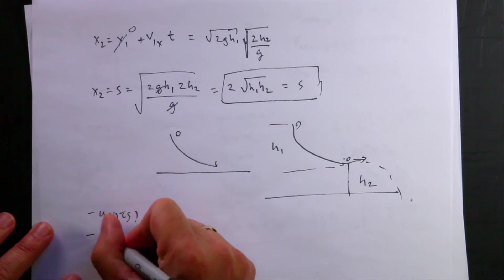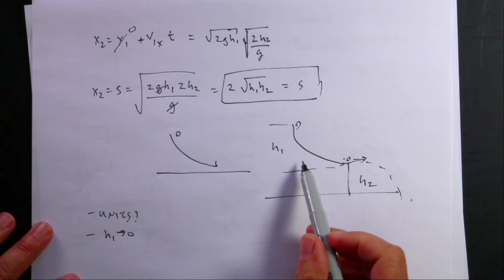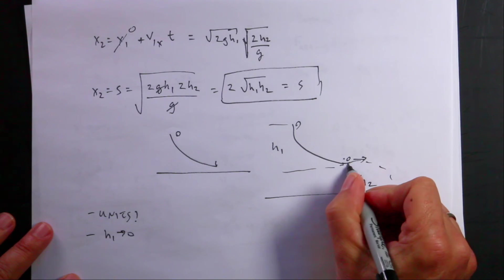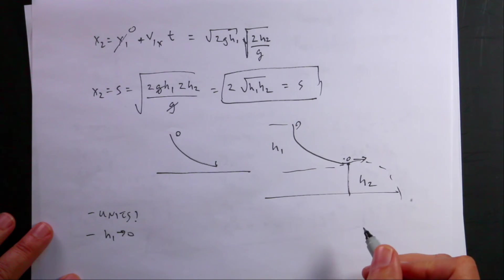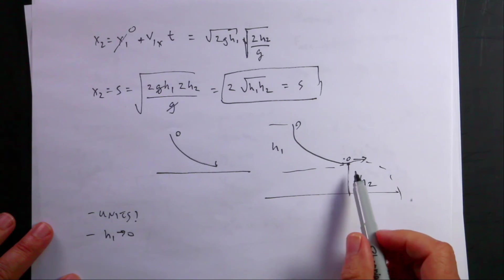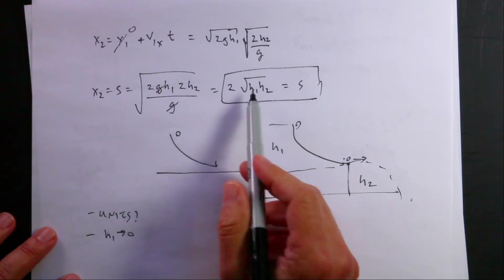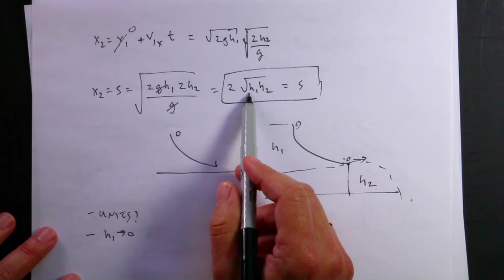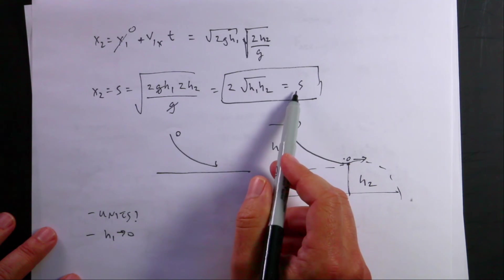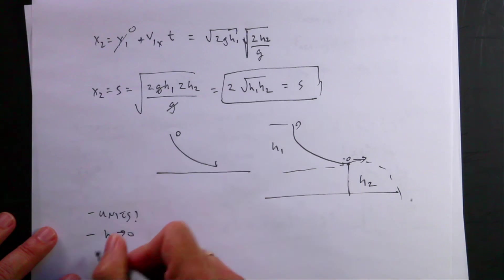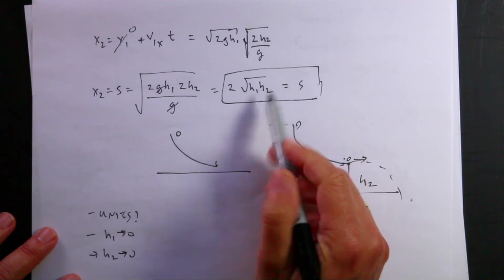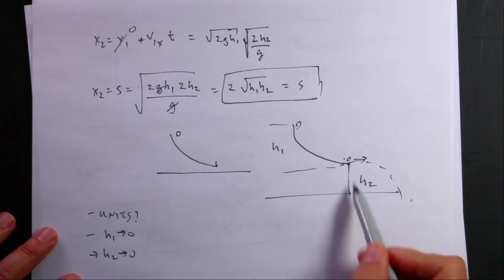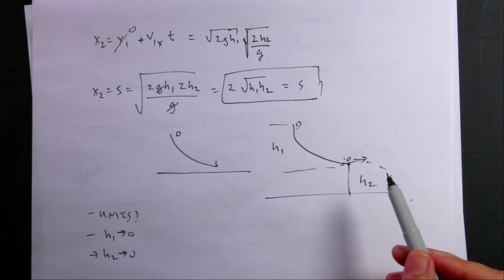Okay, what about as h1 goes to 0? If h1 is 0, then it starts down here and it's not going to have a velocity. So it's not even going to fall off. I mean, if you want to consider it falling off, it just falls straight down. So if h1 is 0 and I put in h1 0 here, I get 0. That makes sense. Also, if h2 is 0. If h2 is 0, then this is flat. And so how far does it go? It just hits the ground. So it goes to 0 too.